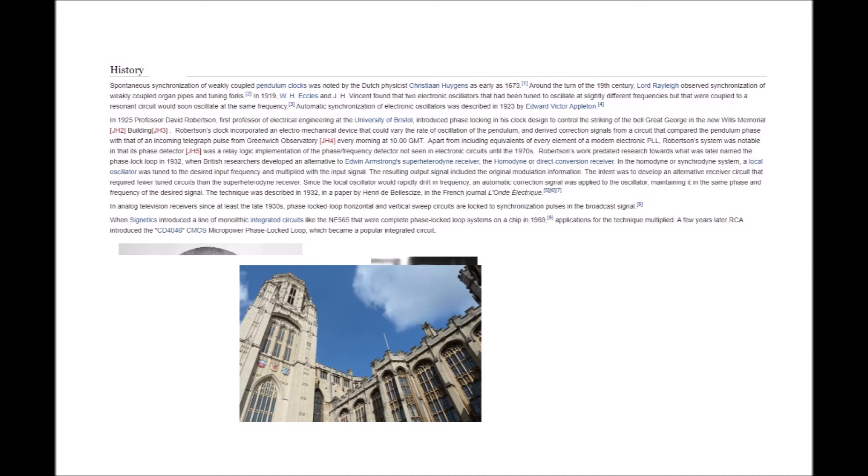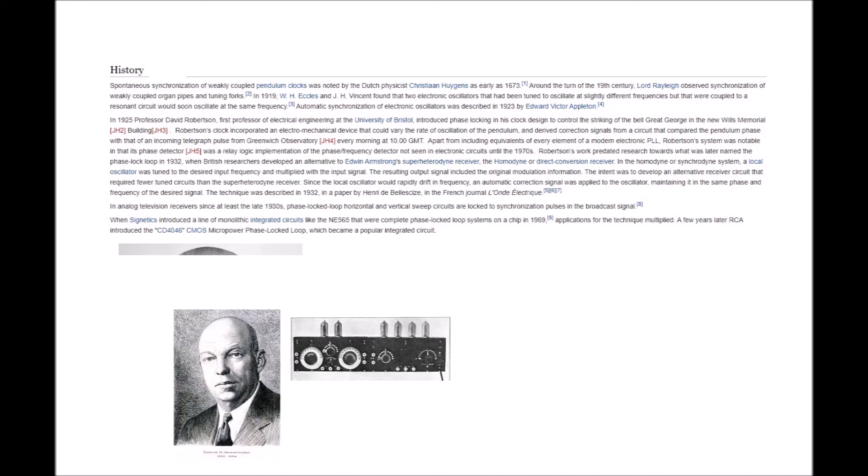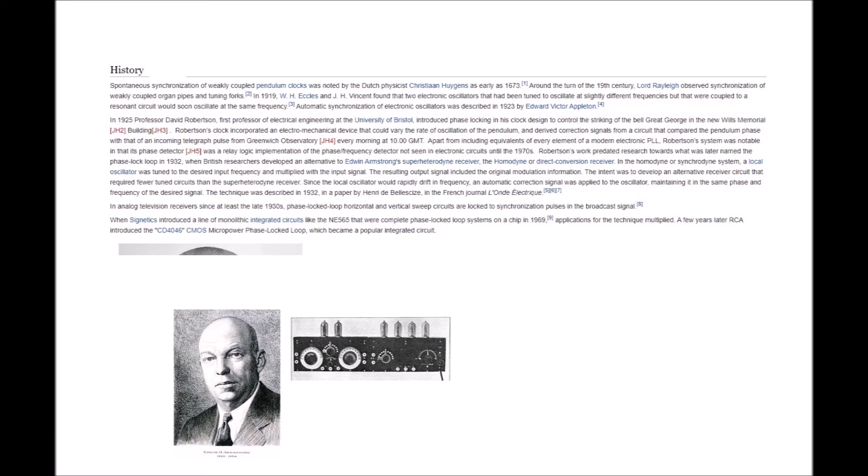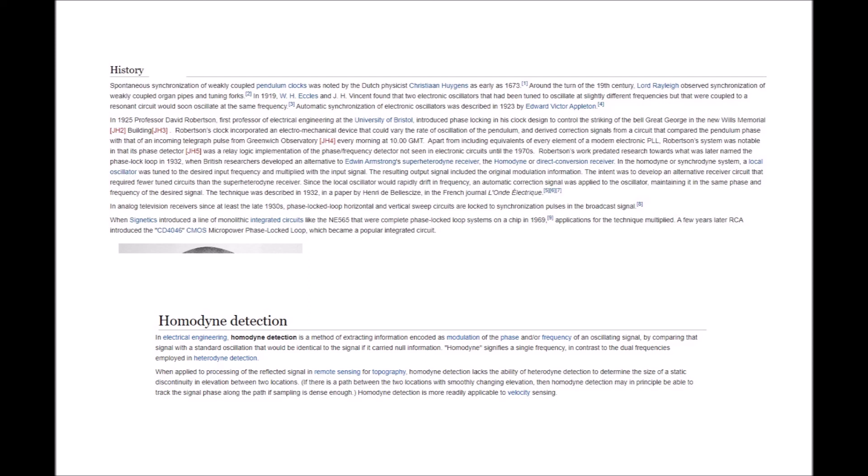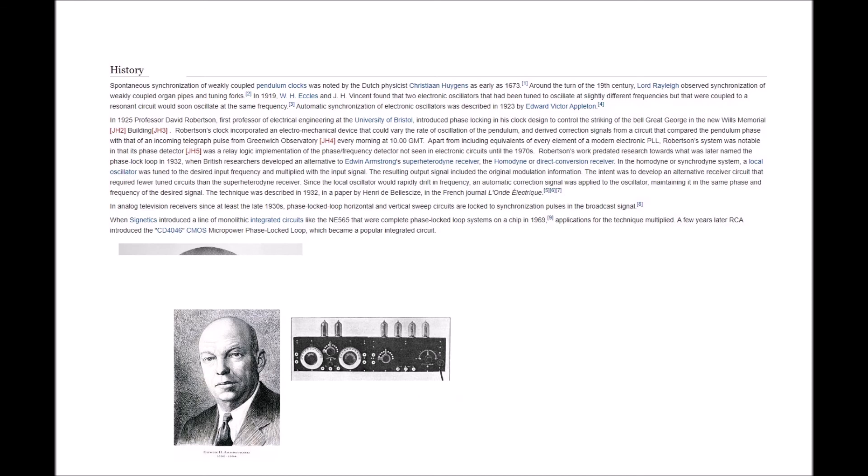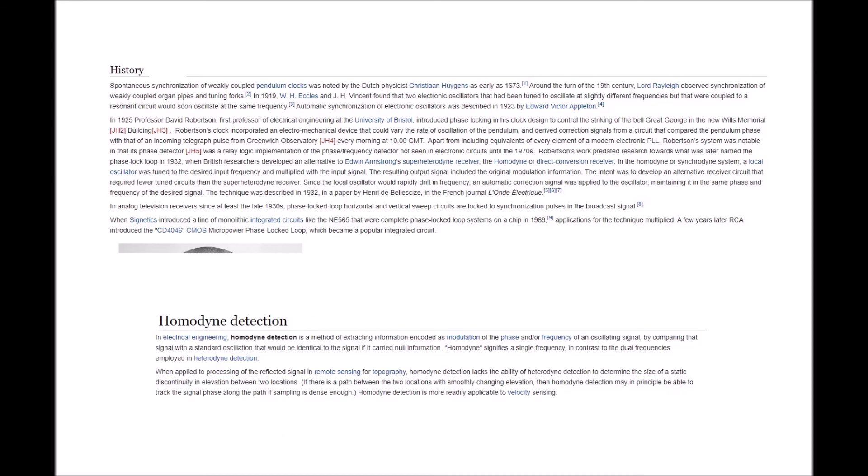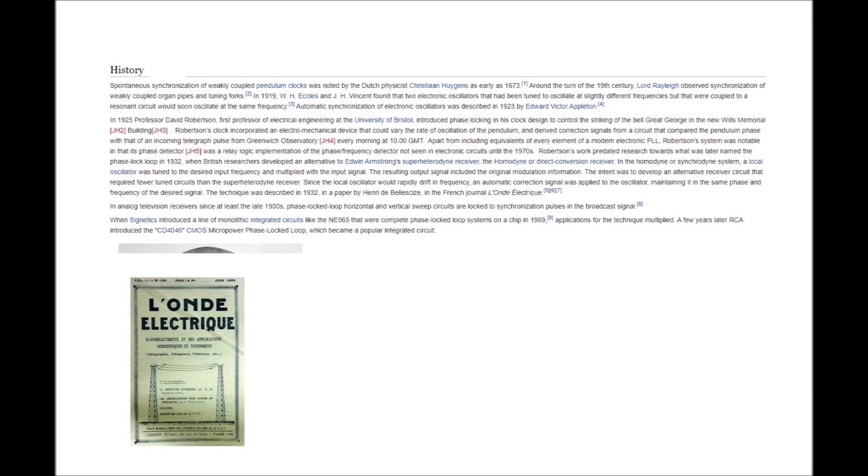Robertson's work predated research towards what was later named the phase lock loop in 1932 when British researchers developed an alternative to Edwin Armstrong's superheterodyne receiver, the homodyne, or direct conversion receiver. In the homodyne, or synchrodine system, a local oscillator was tuned to the desired input frequency and multiplied with the input signal. The resulting output signal included the original modulation information. The intent was to develop an alternative receiver circuit that required fewer tuned circuits than the heterodyne receiver. Since the local oscillator would rapidly drift in frequency, an automatic correction signal was applied to the oscillator, maintaining it in the same phase and frequency of the desired signal. The technique was described in 1932 in a paper by Henri de Bellesize in the French journal L'Electrique.